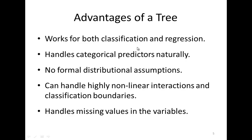The advantages of trees are that they work for both regression and classification. They can handle categorical predictors in a very natural way — you just send some categories left and some right. They make no formal distributional assumptions, so we're not going to say the data come from a normal distribution. Trees can handle very non-linear boundaries between groups, which most traditional statistical methods can't do, and they can handle interactions, which most traditional methods don't do well. Trees can also handle missing values.